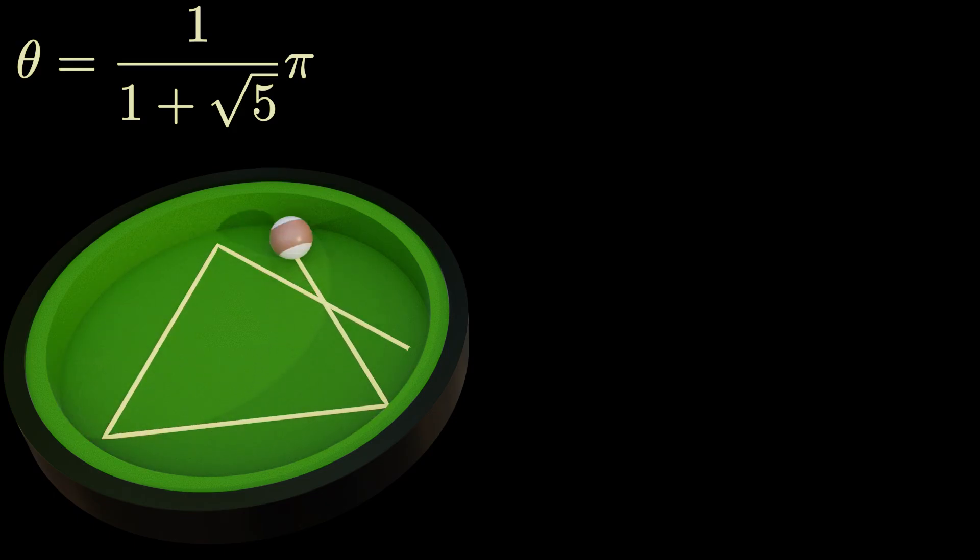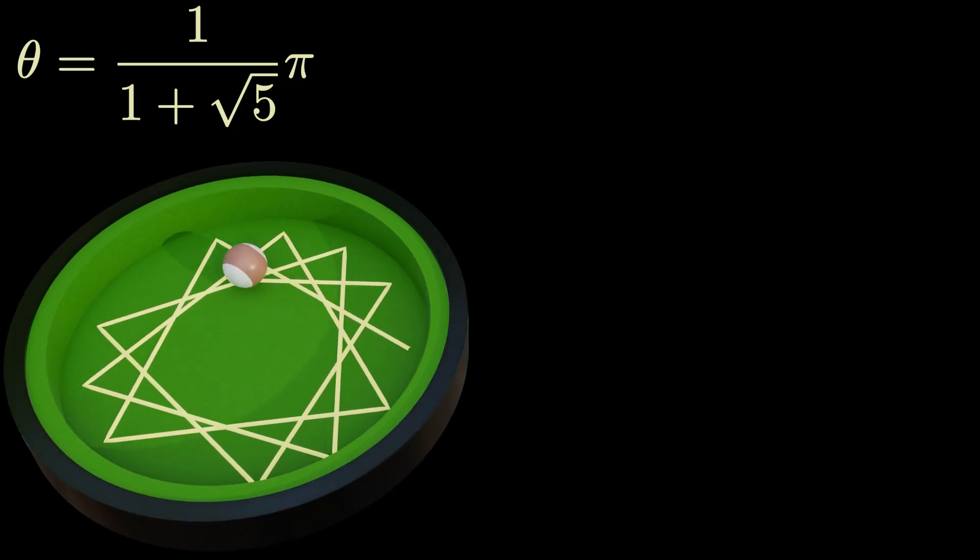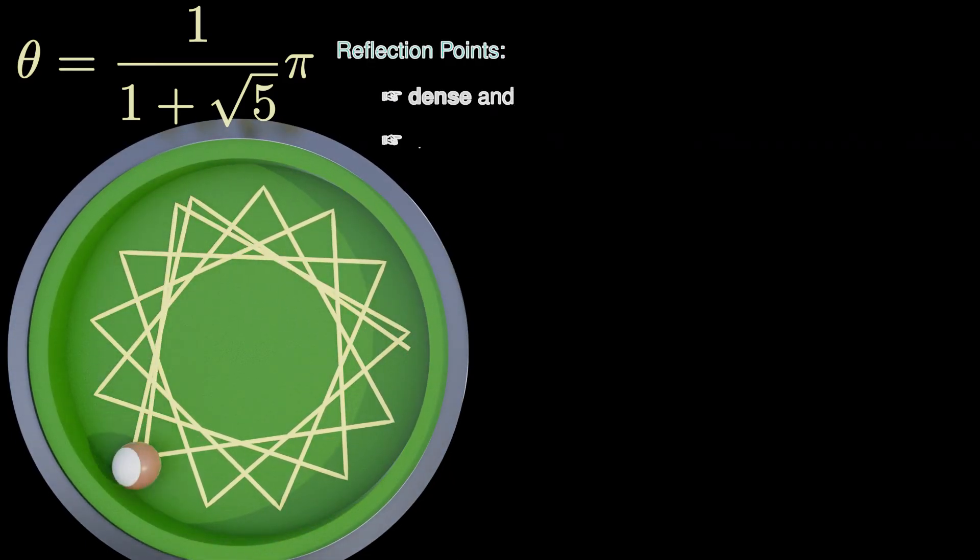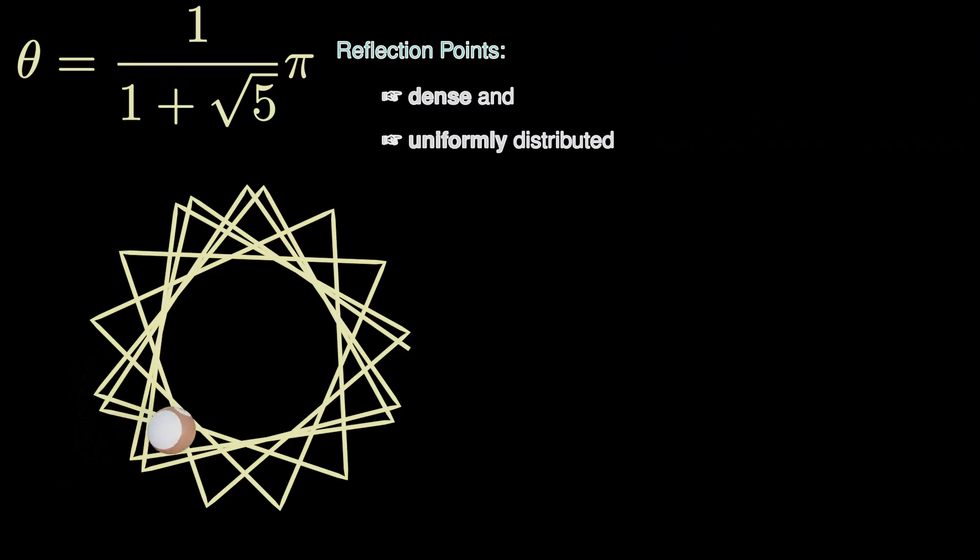Since there is no finite denominator in this case, we expect infinitely many different reflection points. It does not come as a surprise that the trajectory will not close in this case. Moreover, the infinitely many reflection points are dense and uniformly spread across the rim of the entire billiard table.